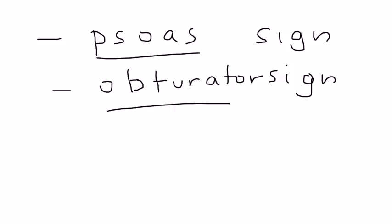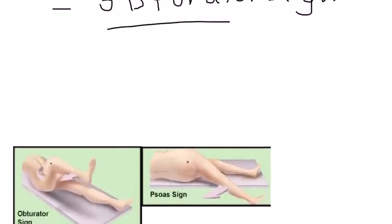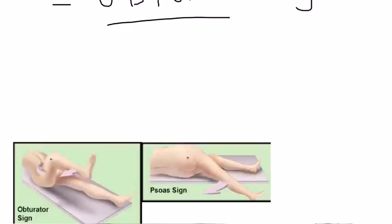Well what is obturator and psoas? Well here's a couple diagrams. This first one is the obturator sign right here. What's going on here? Well you are initially flexing the thigh and then you internally rotate. So the arrows here, if you can see, the arrows are telling you exactly what to do and that can elicit pain.